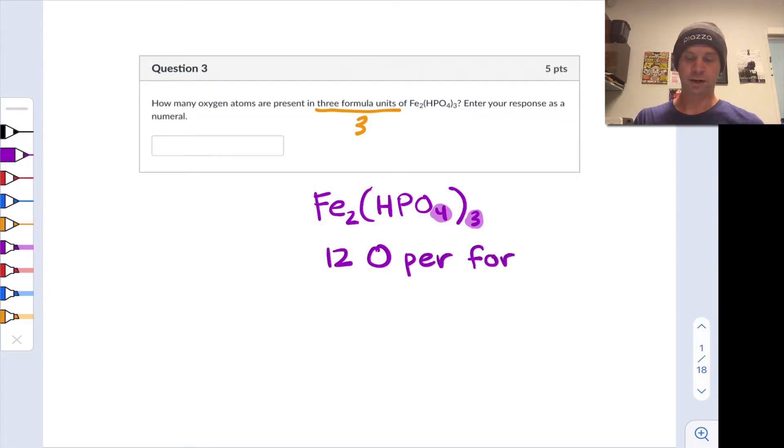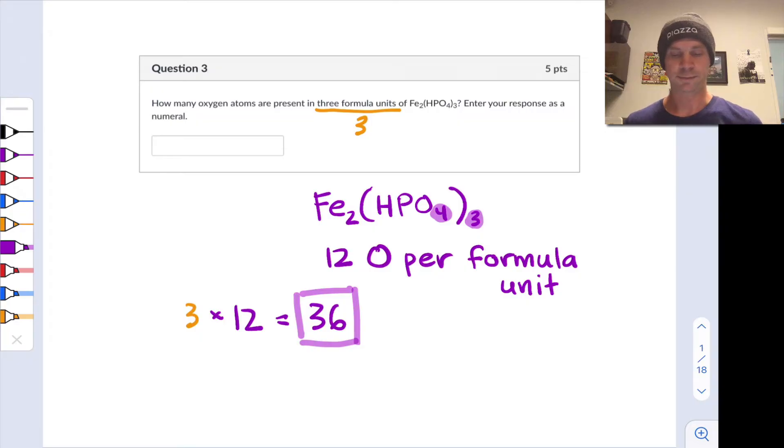12 oxygens per formula unit is what we have going on in this compound. If we've got three formula units times 12 oxygens per formula unit, that gives us a total of 36 atoms of oxygen in three formula units of this compound. That's 4 times 3, 12 in one formula unit and 36 in three formula units. Pretty straightforward but useful and very important application of interpreting a chemical formula.